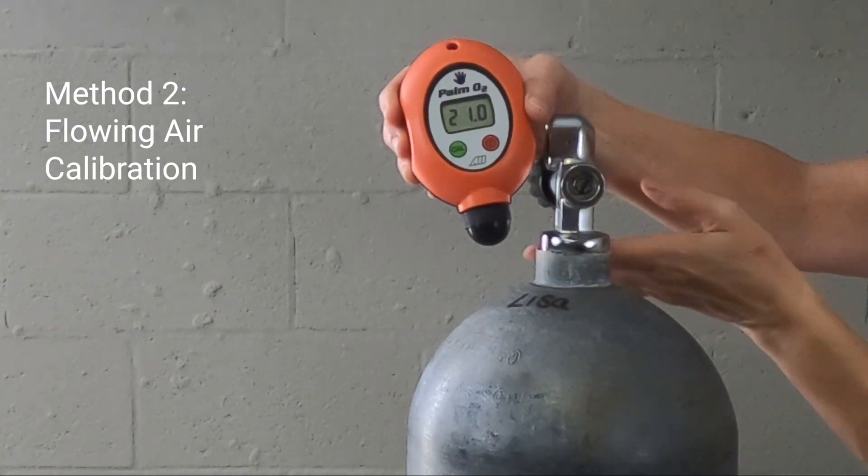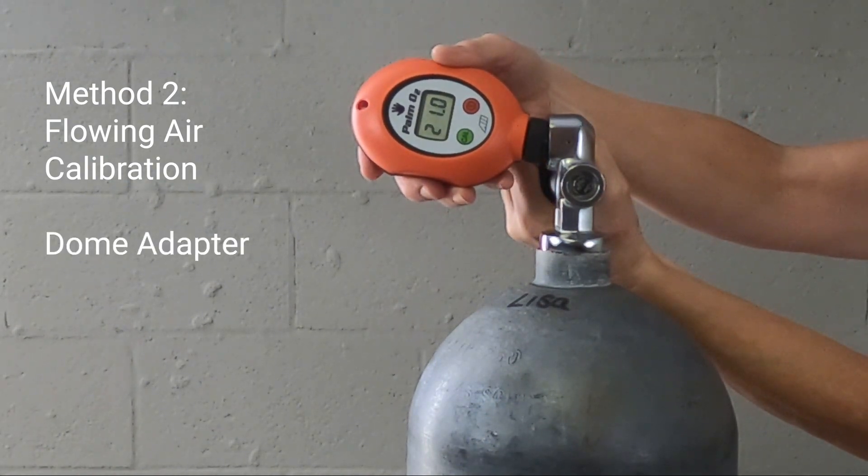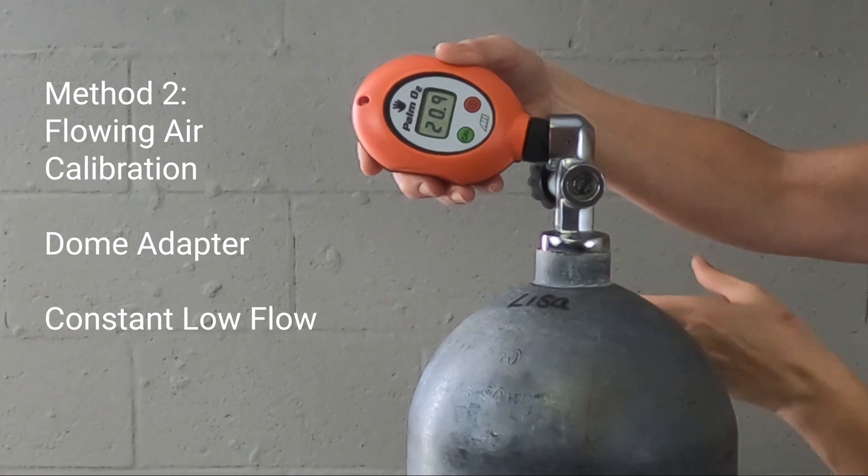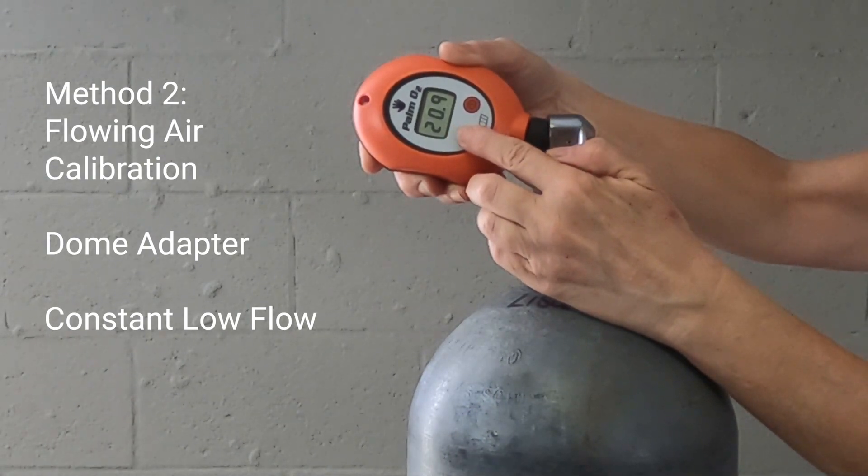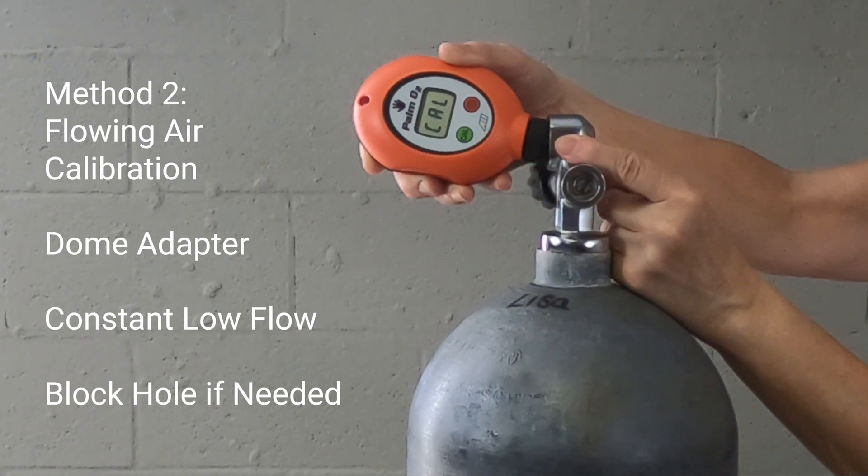Using method two, we calibrate with flowing air using the included dome adapter. Open the valve just enough to get a constant low flow of air. If the DIN outlet valve design includes a tiny hole on the side, hold your finger over the hole.